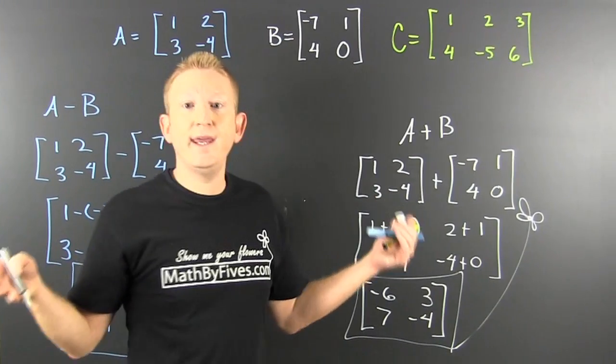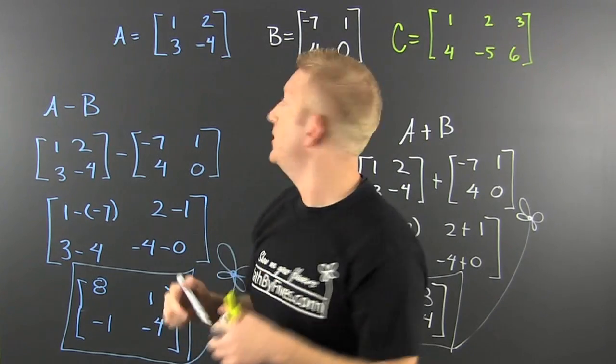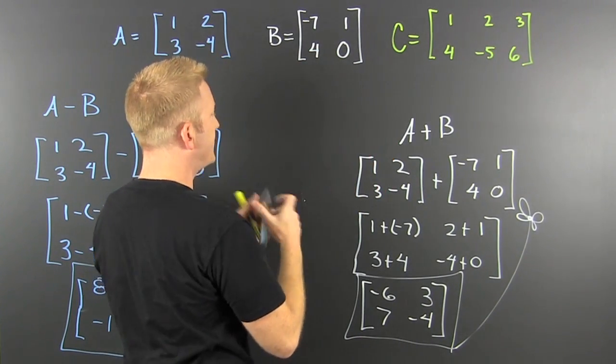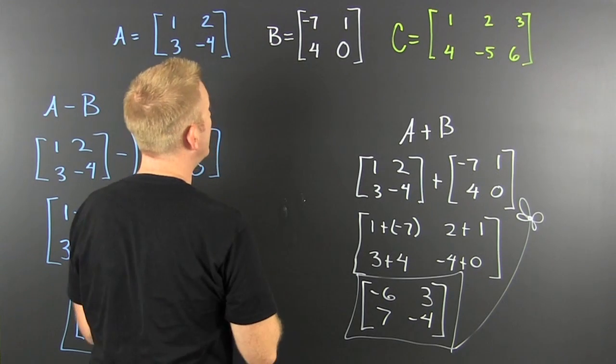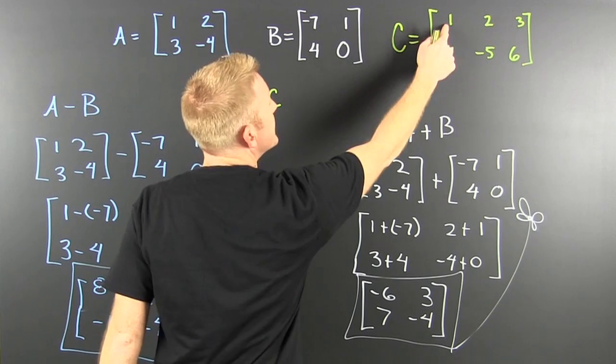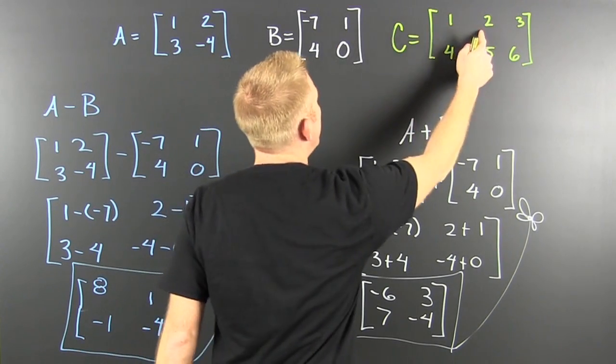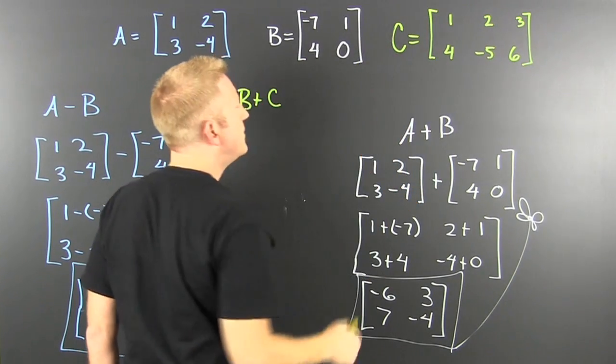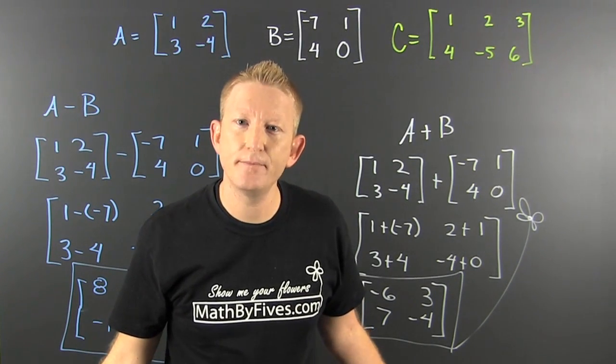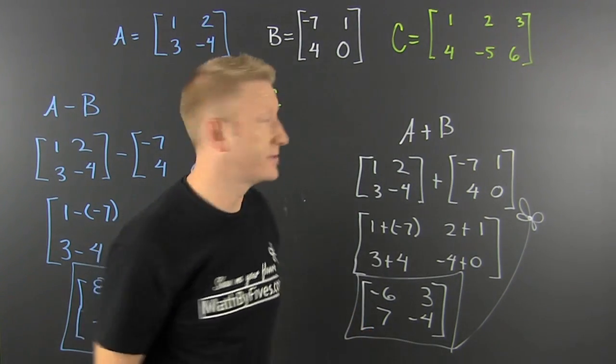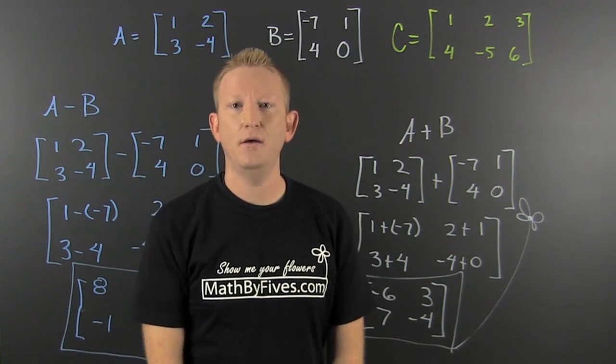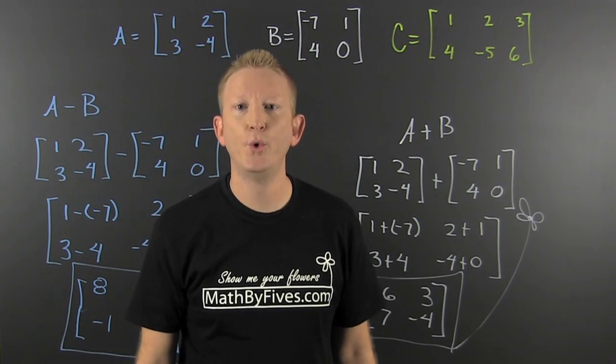One more. Wait a minute. What if I try to add B and C? Well, let's see. B plus C. So then, I take this and I add it to that. I take this and I add it to that. And I take... Oh. That's whack. You can't add matrices that aren't the same size. It matters. Adam.